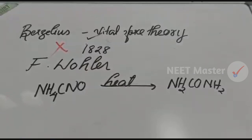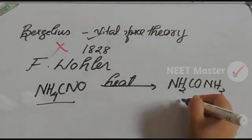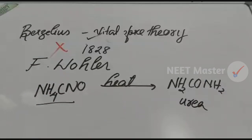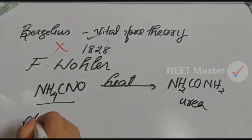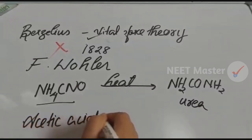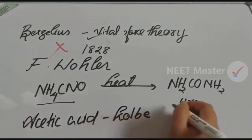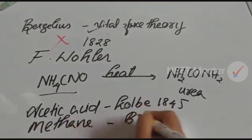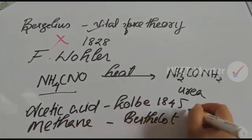This was important because it showed that vital force is not necessary for forming organic components. Ammonium cyanate upon heating gives the organic compound urea — proving it can be synthesized in the lab. Later, acetic acid was also prepared synthetically, around 1845 to 1856. This concludes the history part of organic chemistry.